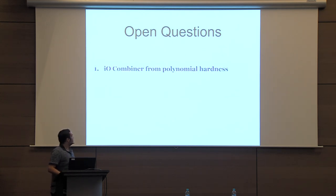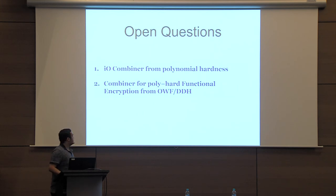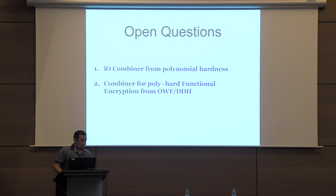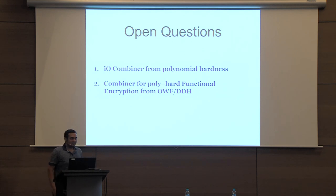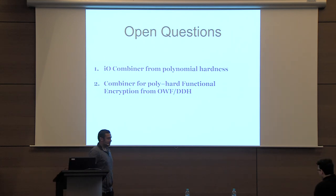I'll leave you with some interesting open questions. First, is it possible to construct an IO combiner from just polynomial security loss? Second, if you have N functional encryption candidates, can you get one secure function encryption candidate from just polynomial hardness and assumptions such as one-way functions or DDH? Thank you.